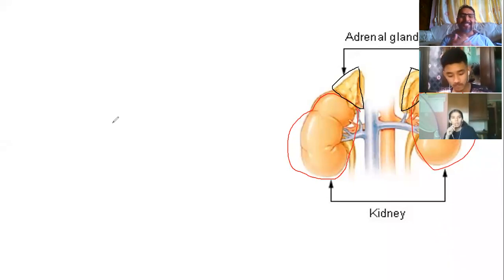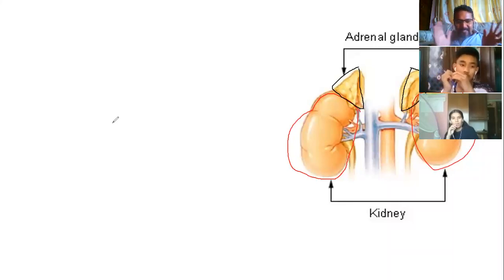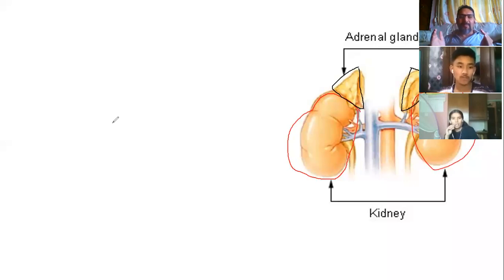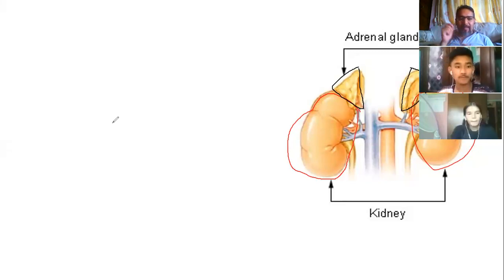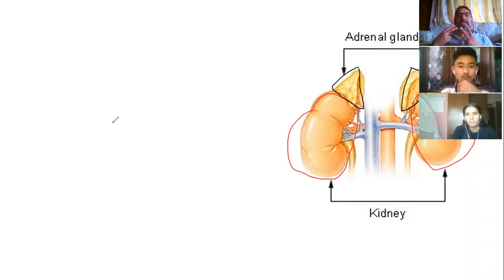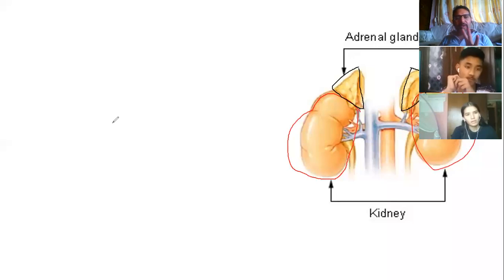The third function is that sex hormones help develop secondary sexual characteristics. To identify the sex of a human being, you can observe the body — for example, identifying a girl or a boy by appearance. These are secondary sexual characteristics. The sex organ itself is the primary characteristic, and the secondary sexual characteristics are determined by sex hormones.